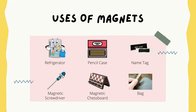The third one is the name tag — there is a magnet on the name tag so that it can stick to your clothes. The fourth one is the magnetic screwdriver — the magnetic screwdriver can attract the screw so that it won't drop when you are using the screwdriver.